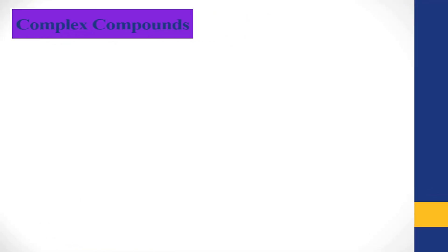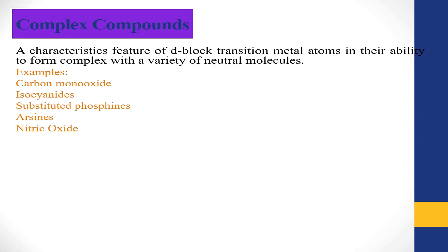Whenever we talk about complex compounds, we will talk about transition metals, because transition metals are the elements in the periodic table which contain empty d orbitals. A characteristic feature of d-block transition metal atoms is their ability to form complexes with a variety of neutral molecules. Neutral molecules can also be part of complex compounds.